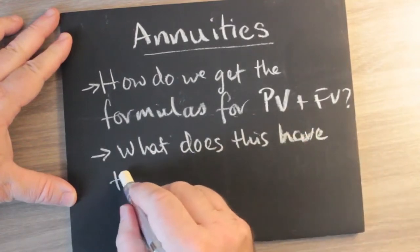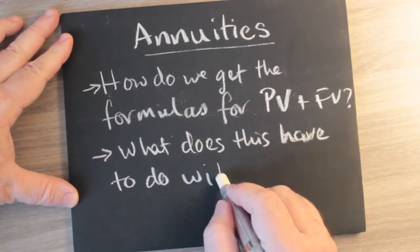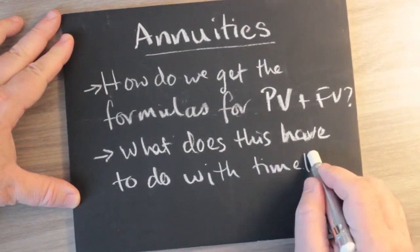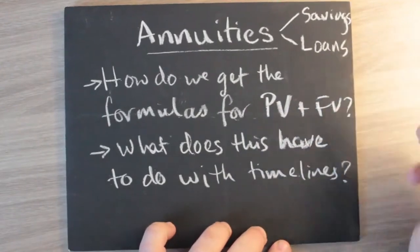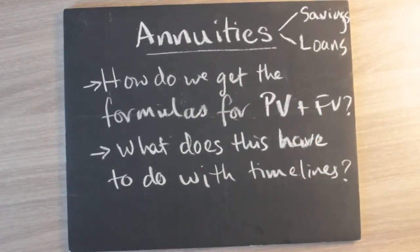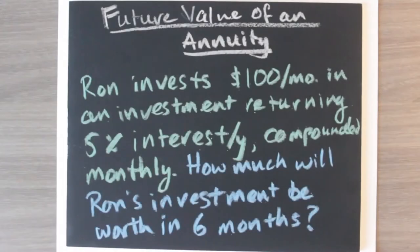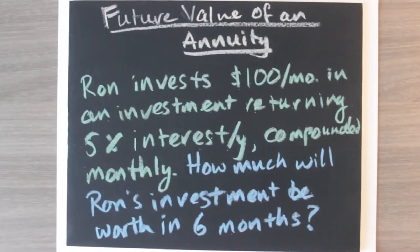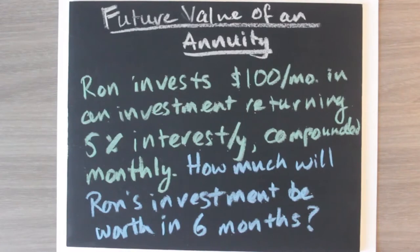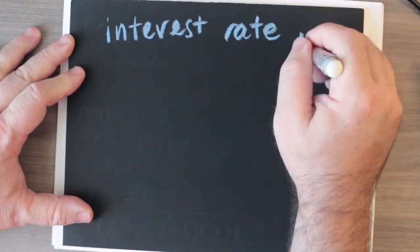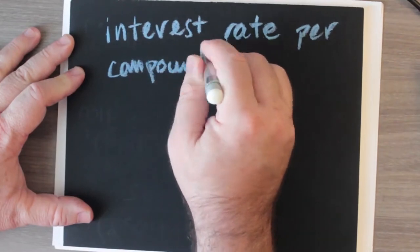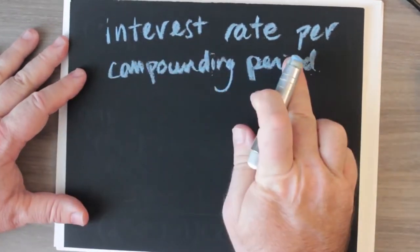How do we get the formula for future value, and what does this have to do with the timeline? We'll show that the timeline calculation gives the same value as the future value formula. Example: Ron invests one hundred dollars per month in an investment returning five percent interest per year compounded monthly. How much will Ron's investment be worth in six months?